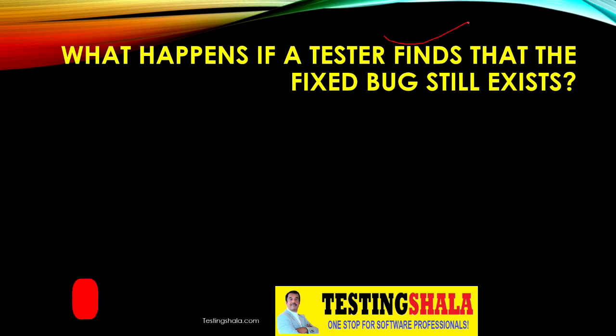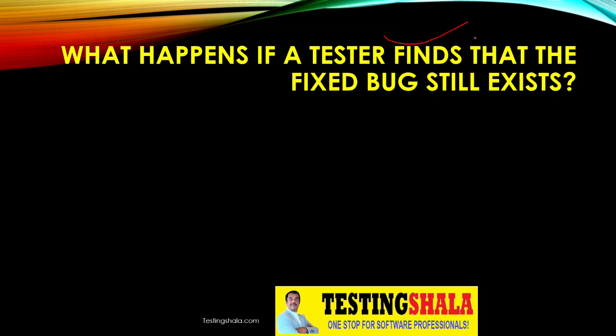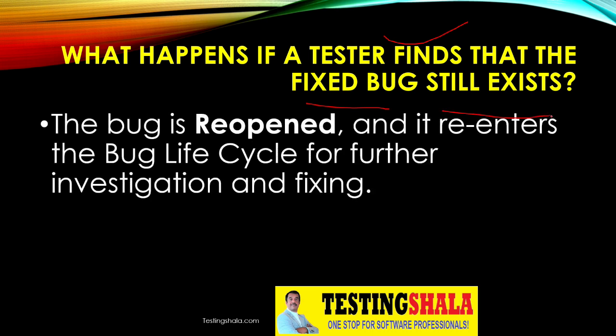What should a tester do if a fixed bug is still occurring? If the bug is still open and we are able to reproduce it, we should reopen the defect and enter additional information — such as our further investigation findings — and provide that information to the development team so they can fix the issue.